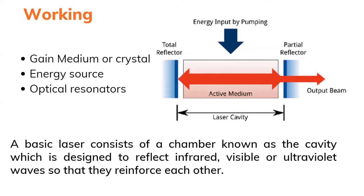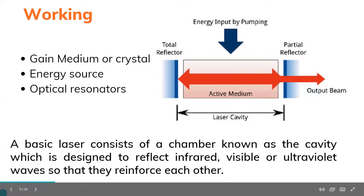Once we have this beam, the partial reflector allows some portion to exit the cavity — and that is what we call the laser. To summarize: we have a cavity designed to reflect radiation, filled with different materials that determine output wavelength. Two mirrors — one fully reflective, one partially reflective — and an external pumping mechanism activates the process, producing the laser beam.